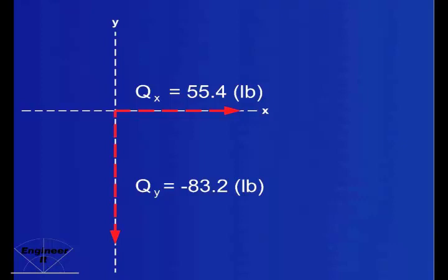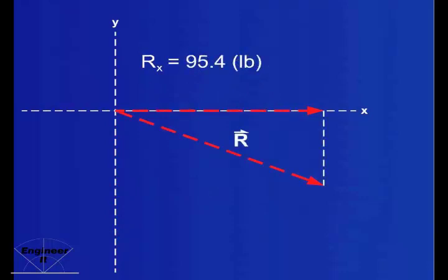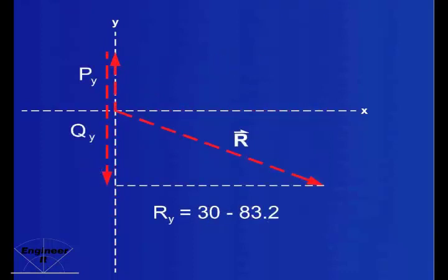By summing the x component of P and the x component of Q, we can obtain R sub x, which is 95.4 pounds. And by summing the y components, we can find that R sub y equals negative 53.2 pounds.